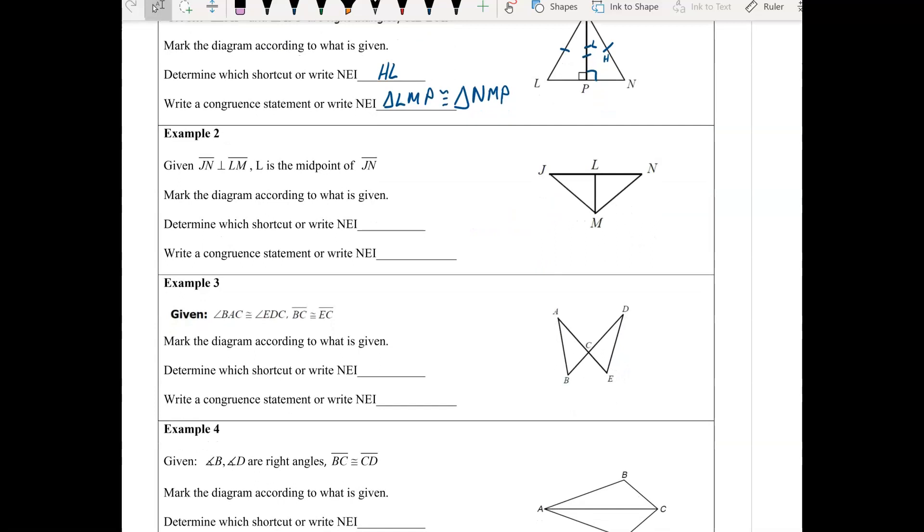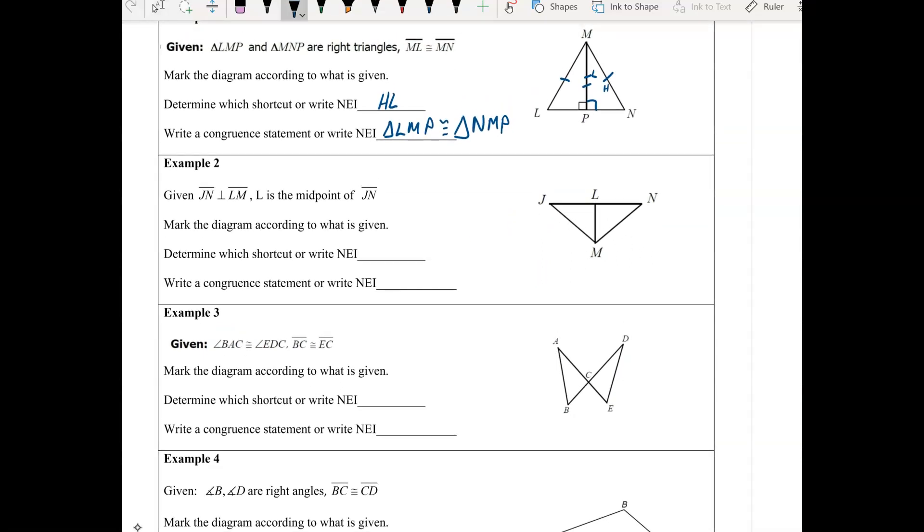Now just because it looks like a right triangle, doesn't mean we're going to use HL, even if there is perpendicular, so let's see if this is HL or not. We do have perpendicular, so JN is perpendicular to LM, that means that these are both right angles. So right now, if I were you, I would be thinking, is this another HL, maybe it is, maybe it isn't, let's find out. All right, L is the midpoint of JN, so that means this L is right in the middle, so these two have to be equal, and of course, JN is congruent to itself.